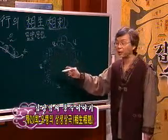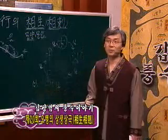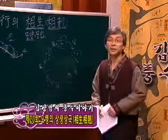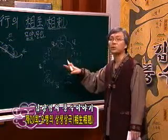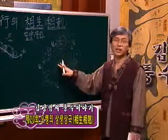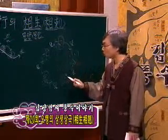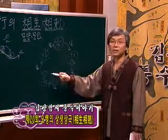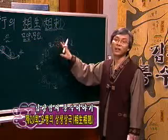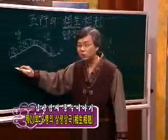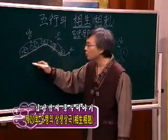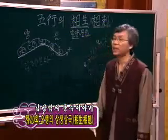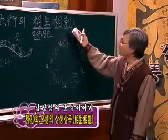'금(金)'을 단순히 쇠라고 생각하면 답이 잘 안 나옵니다. 쇠는 금기운의 아주 작은 부분을 이야기하는 겁니다. 상생이라는 것은 다음 기운을 길러낸다, 다음 기운으로 변화한다는 뜻입니다. 목생화, 화생토, 토생금, 금생수, 수생목 — 이것이 상생관계입니다.